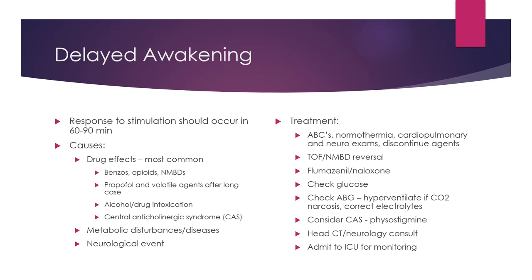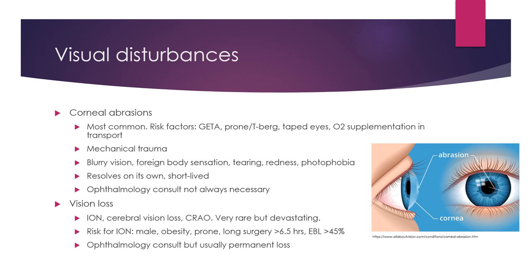Corneal abrasions are the most common eye injury in the PACU, caused by mechanical trauma. Risk factors include general anesthesia, prone or Trendelenburg positioning, taped eyes, and oxygen supplementation during transport. Symptoms include blurry vision, foreign body sensation, tearing, redness, and photophobia; it usually resolves on its own, and patients may be offered saline flushes and compresses. More rare but devastating causes of vision loss include ischemic optic neuropathy, cerebral vision loss, and central retinal artery occlusion. Risk factors for ischemic optic neuropathy include male sex, obesity, prone positioning, surgery over 6.5 hours, and blood loss greater than 45% of blood volume; prognosis is poor and vision loss is usually permanent.